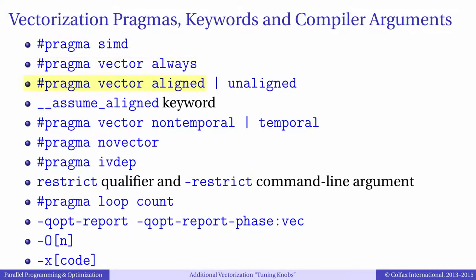Pragma Vector Aligned tells the compiler to drop checks for alignment and not to implement a peel loop. It can be used only when you can guarantee that all vector loads and stores in this loop are on aligned data. Assume Aligned is a more fine-grained way to instruct the compiler about alignment — it applies to individual arrays used in a loop rather than to the entire loop.